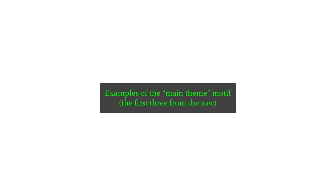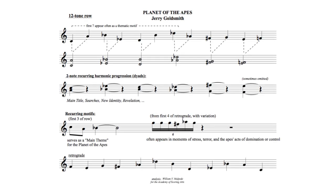The next four examples feature what I call the main theme, which is really a motif derived from the first three notes of the row. These examples continue to play the entire row, but the declaration of those first three notes, I believe, impresses itself on the listener and becomes a somewhat memorable motif, which is heard throughout the score.